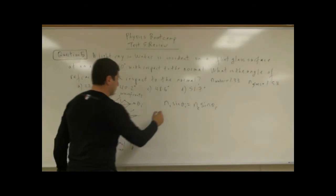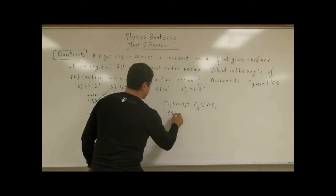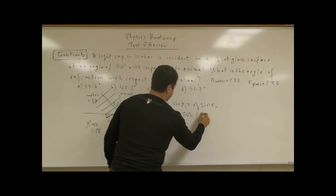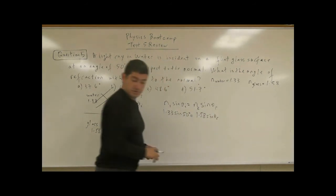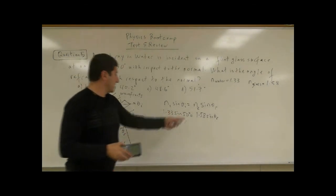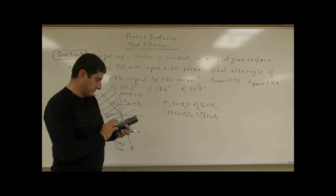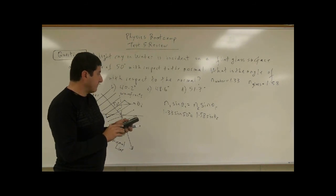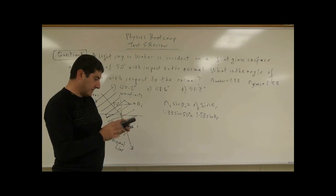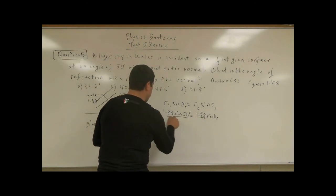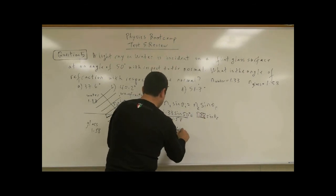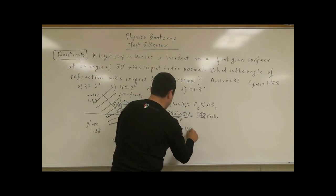So in this case, we're given N1 is 1.33 sine, this one is 50. This one is 1.58 sine theta R. So if we divide this, we get 1.33 sine of 50. Divide that by 1.58. So we basically take this and we bring it here.